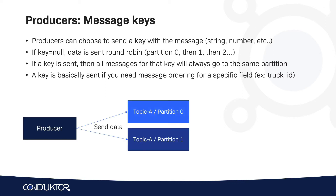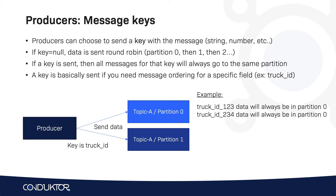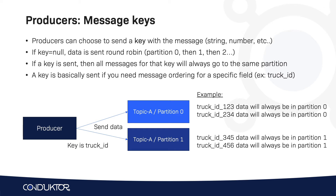For example, if we have a producer sending data to two partitions and the key is truck ID, then truck ID 123 will always go to partition 0, truck ID 234 will also always go to partition 0, and 345 and 456 will always go to partition 1. You will never find truck ID 123 data in partition 1 because of this key property.